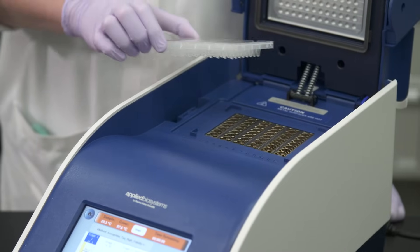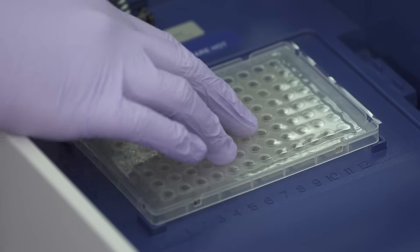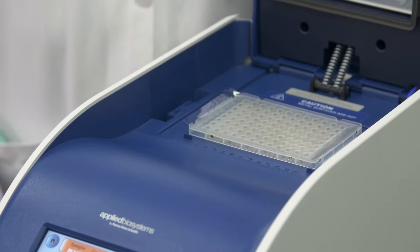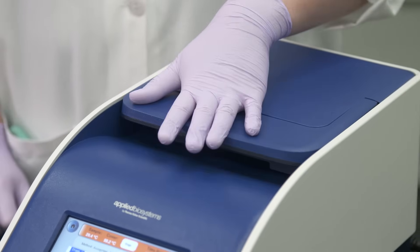A fast or low profile PCR plate is the plate of choice for an instrument with a fast or low profile block type such as the Applied Biosystems Veriti 96 well fast thermal cycler.